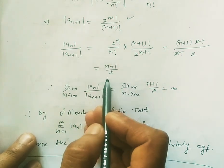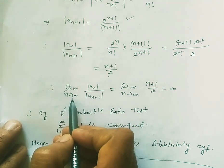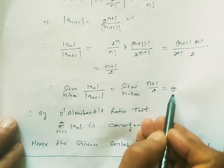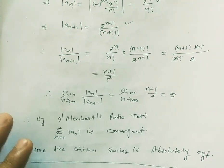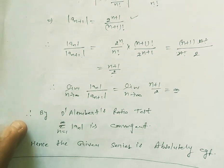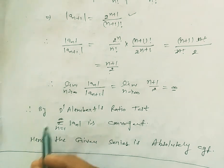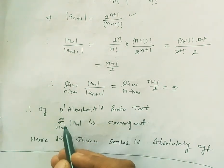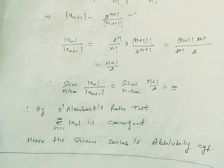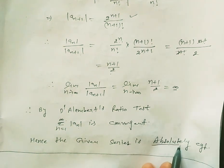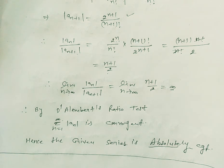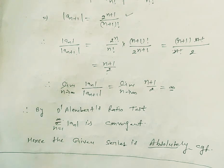Simplifying: (n+1)! = (n+1)*n! and 2^(n+1) = 2*2^n. After cancellation we get (n+1)/2. Taking limit n→∞ of |a_n|/|a_(n+1)| = limit of (n+1)/2 = ∞. By the D'Alembert ratio test, if this limit is infinite, the series is convergent. Therefore summation of |a_n| is convergent, meaning the series is absolutely convergent, and hence also convergent.